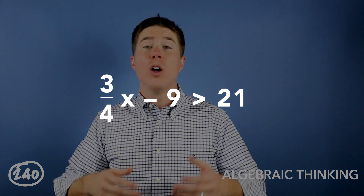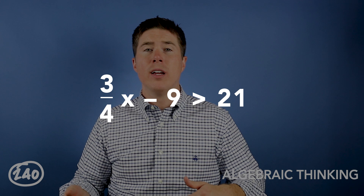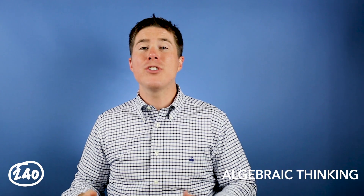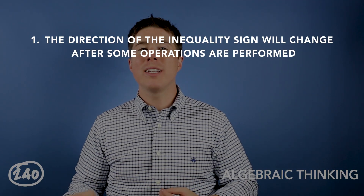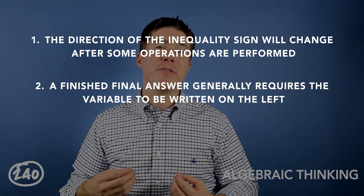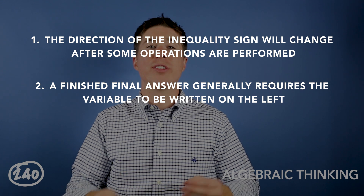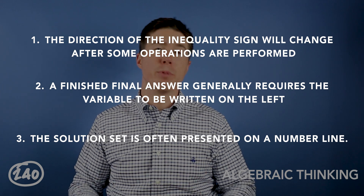You're also going to have to solve inequalities. Solving inequality statements in one variable — such as three-fourths x minus 9 is greater than 21 — is much the same as solving an equation. The key differences are: the direction of the inequality sign will change after some operations, the variable should be written on the left in the final answer, and the solution set is often presented on a number line.